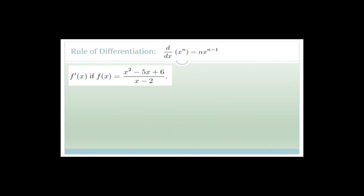Now let's do this question — also a typical exam type question. All of these are old exam paper questions. They want you to find f'(x) if f(x) = (x²-5x+6)/(x-2). At university there's a rule called the quotient rule for dividing things like this, but since you're in Grade 12, there's an easier way — factorize the numerator and see if you can cancel anything.